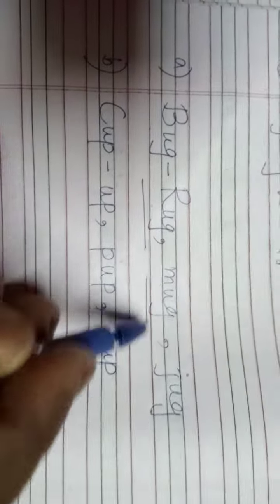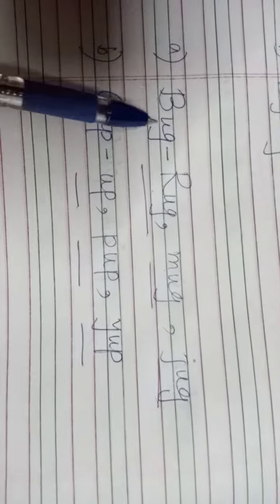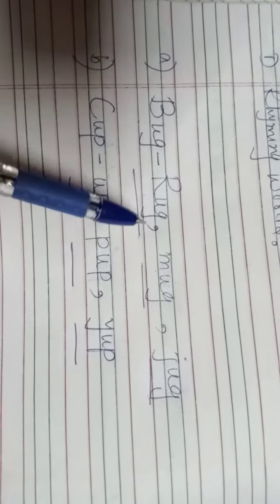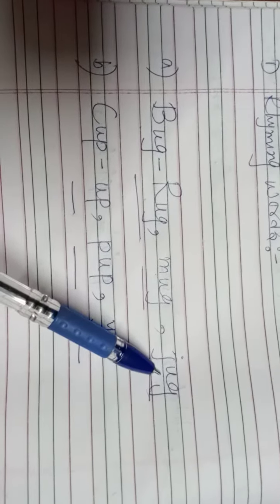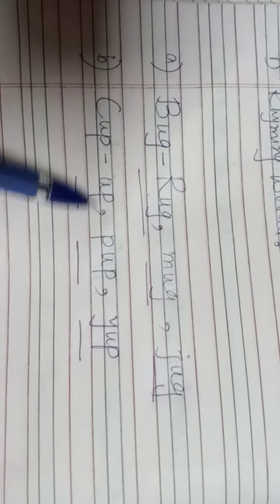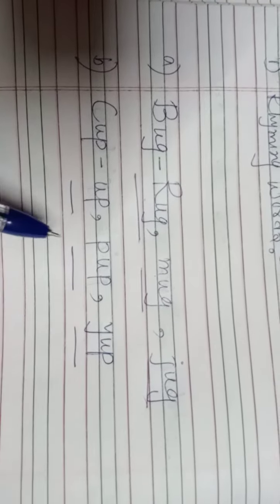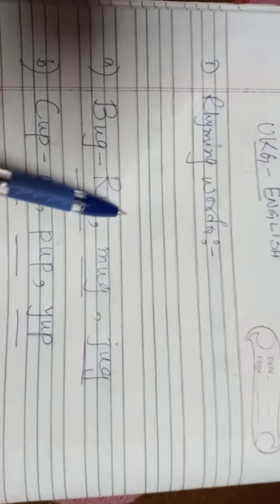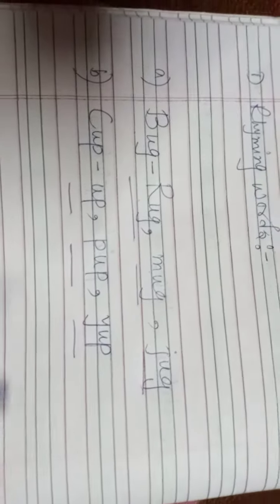So again you have to read: bug, rug, mug, jug, okay? And cup, up, pop, yup, okay? So you have to read, write, and by heart these rhyming words. Thank you.